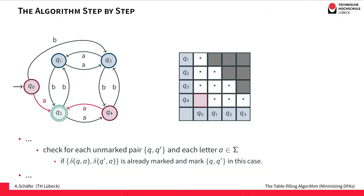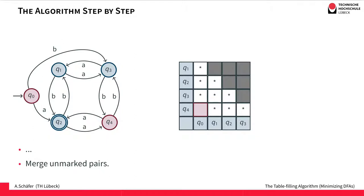Afterwards we have to start all over because we added marks in the last step. We recheck all unmarked pairs — there's only one left. Again considering letter a: from q0 and q4 with a we both go to q2, so no mark. Same for letter b: from q0 with b we go to q3, and from q4 with b we also go to q3 — no mark. We've gone through the whole algorithm again without adding any marks, so the table is stable and we are done.